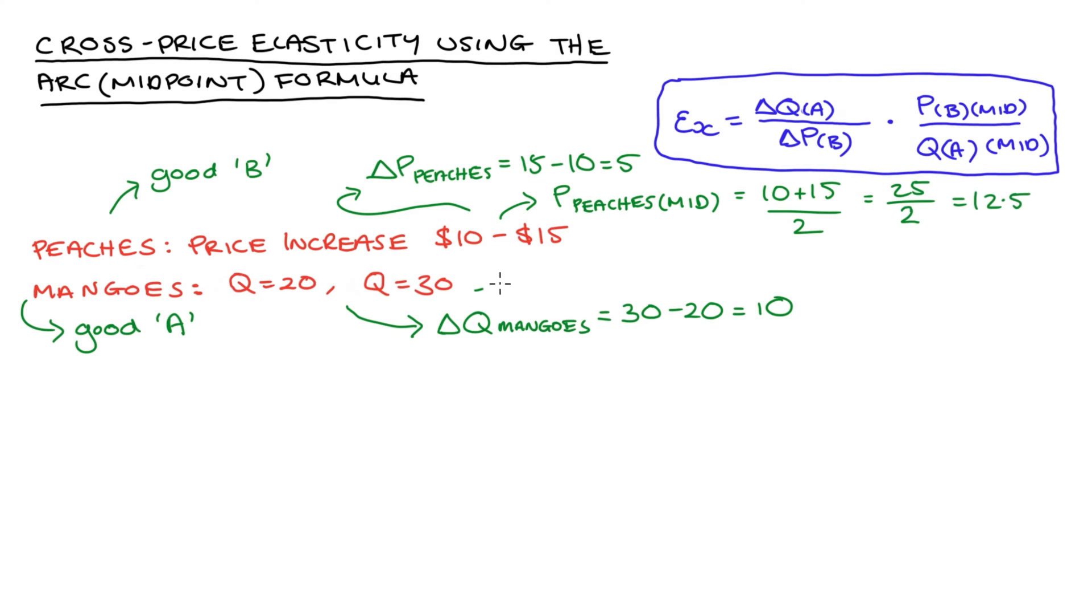Same with the midpoint of the quantity demanded change, you can possibly see automatically that we go from 20 to 30, so the midpoint is 25. If you can't see that, just take the average, so 20 plus 30 over 2, 20 plus 30 is 50, over 2 is 25.